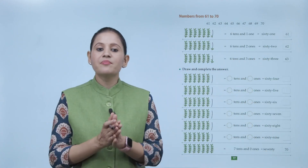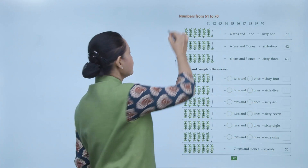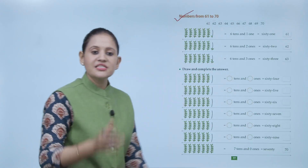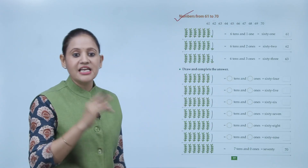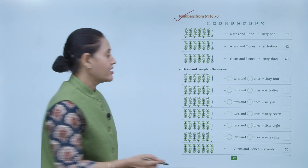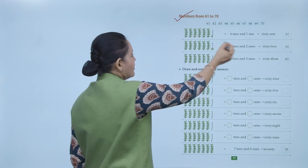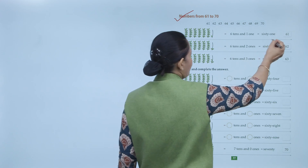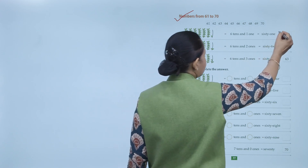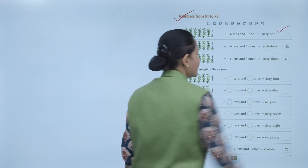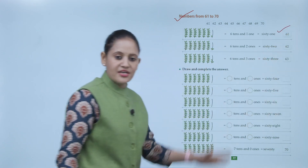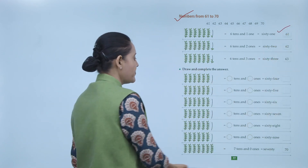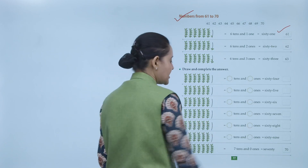Numbers from 61 to 70. 61 means 6 tens and 1 one — spelled S-I-X-T-Y O-N-E, written as 6-1, which is 61. Like this we will write numbers up to 69.